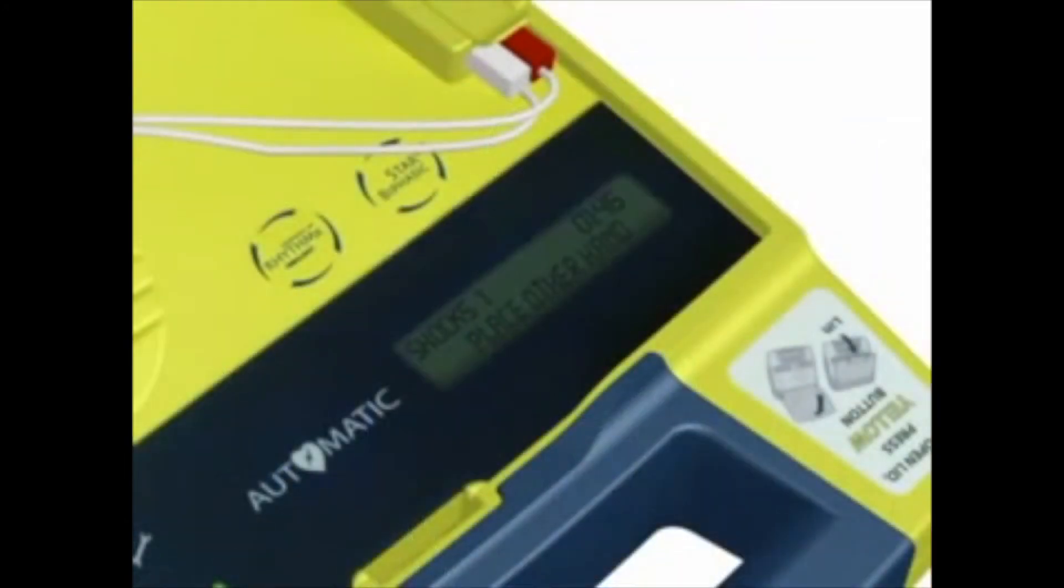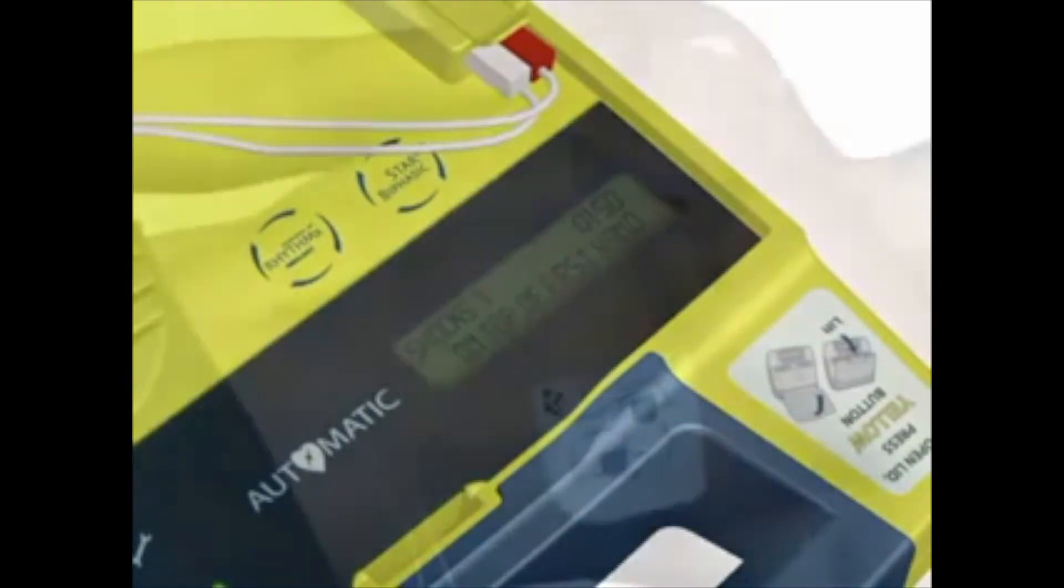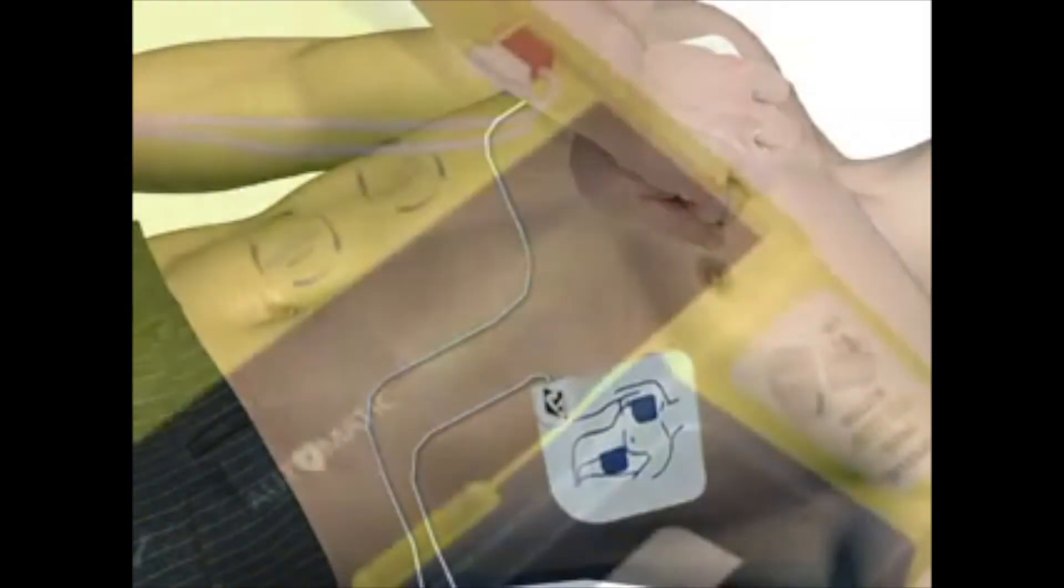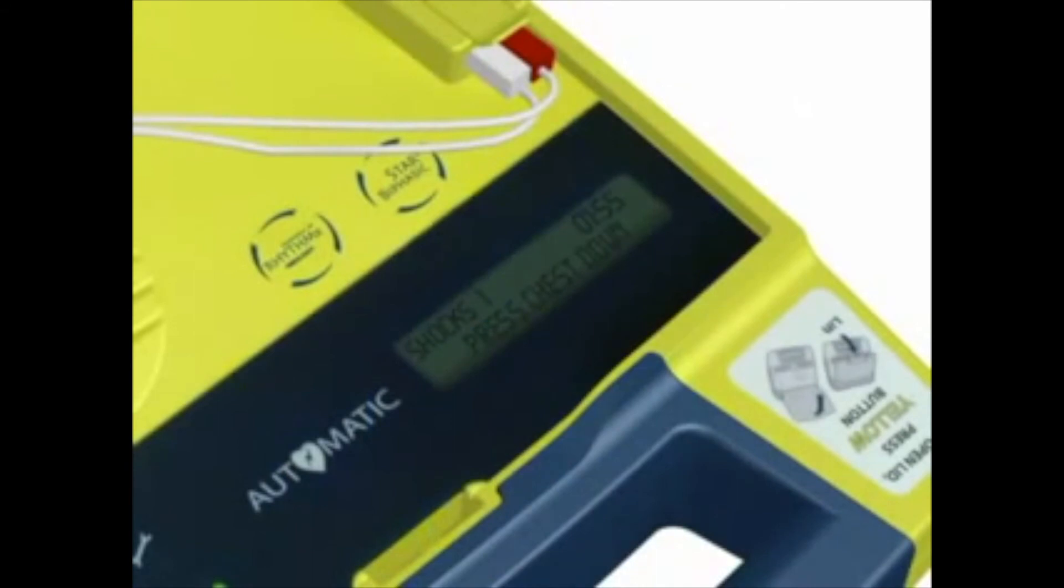Place heel of other hand directly on top of first hand. Lean over patient with elbows straight. Press the patient's chest down rapidly one-third depth of chest, then release. Start CPR.